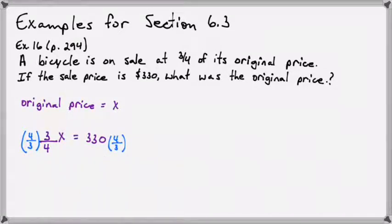So what that's going to do is it's going to let us cross out the four that's in the top and the four that's in the bottom, and the three that's in the top with the three that's in the bottom. So you can see that the coefficient now on the left side is x, and so what we have left is that x equals 330 times four divided by three.